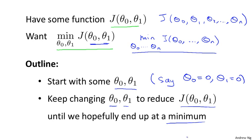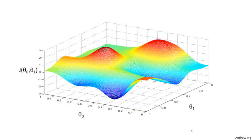Let's see in pictures what gradient descent does. Let's say you're trying to minimize this function. Notice the axes: θ₀ and θ₁ are on the horizontal axes and j is the vertical axis, so the height of the surface shows j, and we want to minimize this function. We're going to start off with θ₀ and θ₁ at some point on the surface. Now I want you to imagine that this figure shows a hill — like the landscape of some grassy park with two hills. Imagine you are physically standing at that point on the hill.